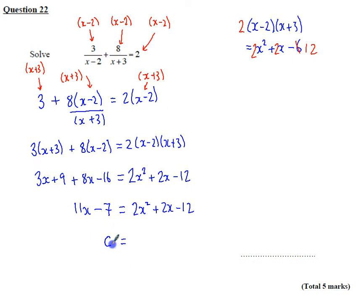Now I'm going to just bring everything to the right-hand side and have a 0 on the left-hand side. I've got 2x squared. I'm going to take off 11x from both sides of my equation. So that makes minus 9x. And I'm going to add 7, which gives me minus 5.